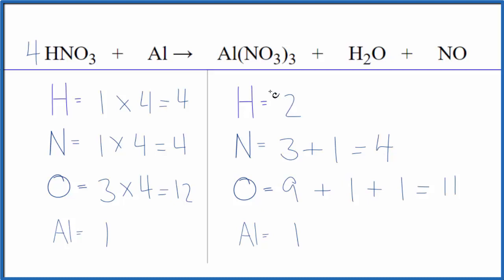On the product side, we have two hydrogens, four here. Let's fix the hydrogens by putting a two in front of the water. Two times two. That'll balance the hydrogen atoms.